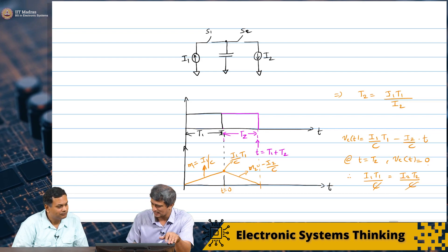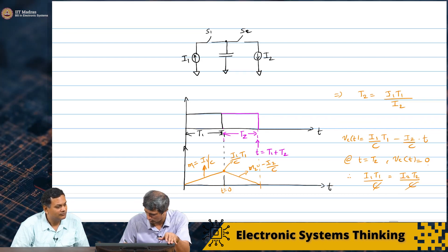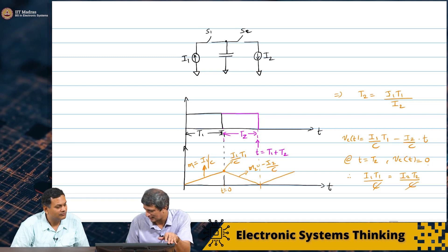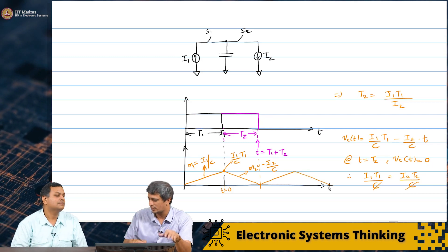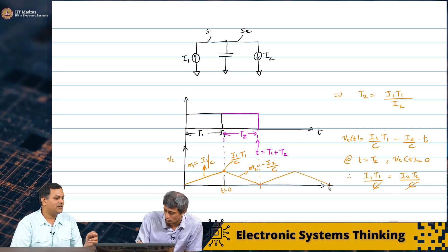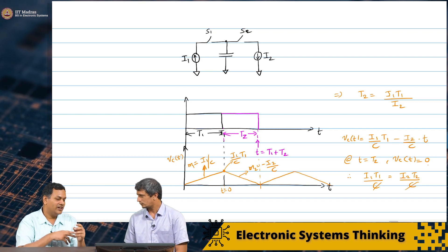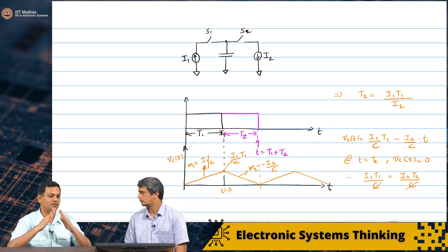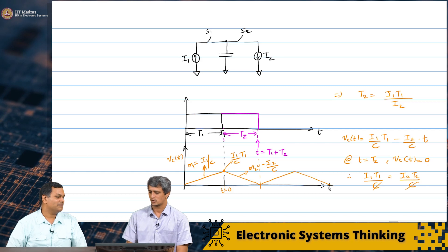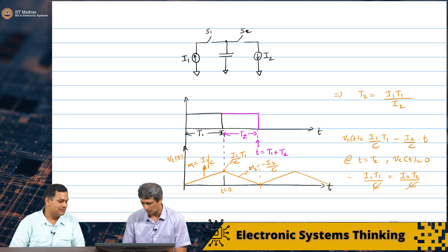So, now we see that we have a nice triangular waveform that is going to repeat. In fact, now I can see if you had T1 and T2 or I1 and I2 quite different, you will get a triangular waveform with different slopes. One slope will be I1 by C, other will be minus I2 by C and so on.